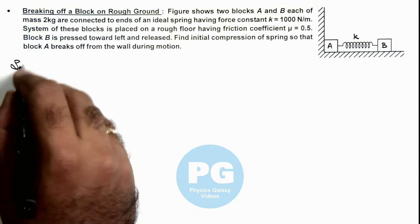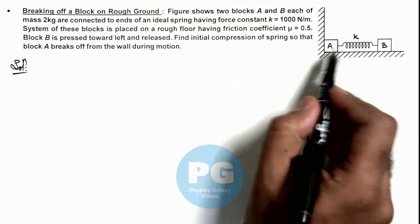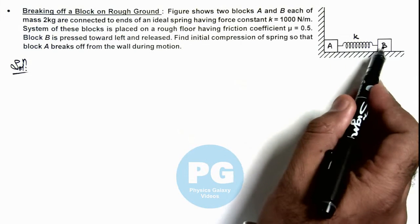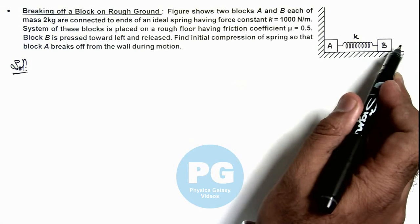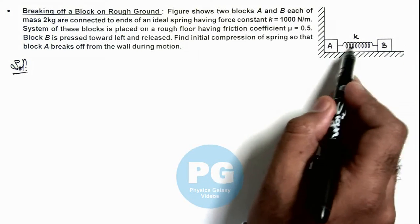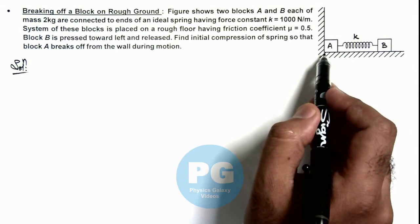We can directly state block A will break off from the wall only when the spring elongation when B will be moving toward right is providing a force more than the friction acting on A at ground.